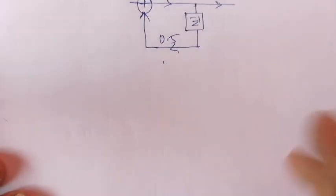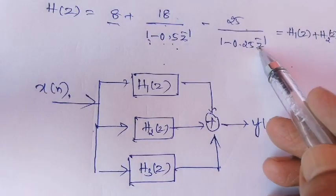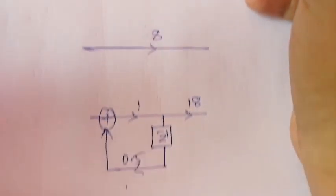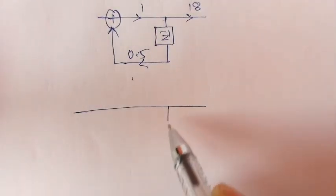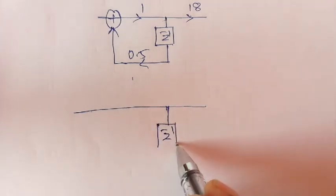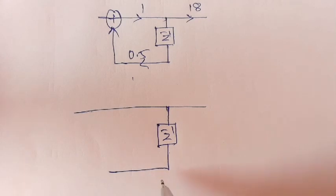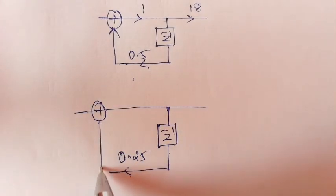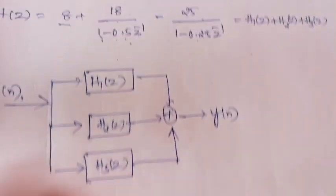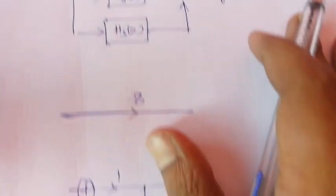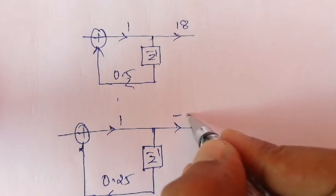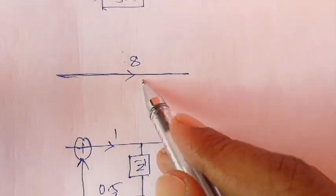For the third system function H3(z) = -25/(1 - 0.25z⁻¹): there is one time delay. The coefficient term is -0.25, so we take the opposite sign, giving +0.25 feedback added with the previous result. The zero system constant is -25.